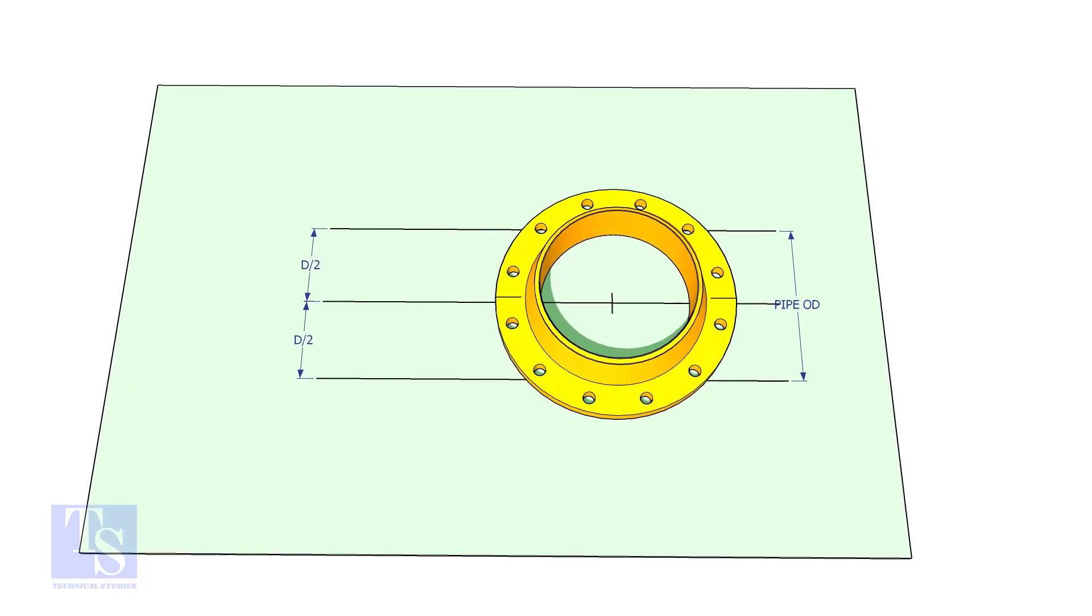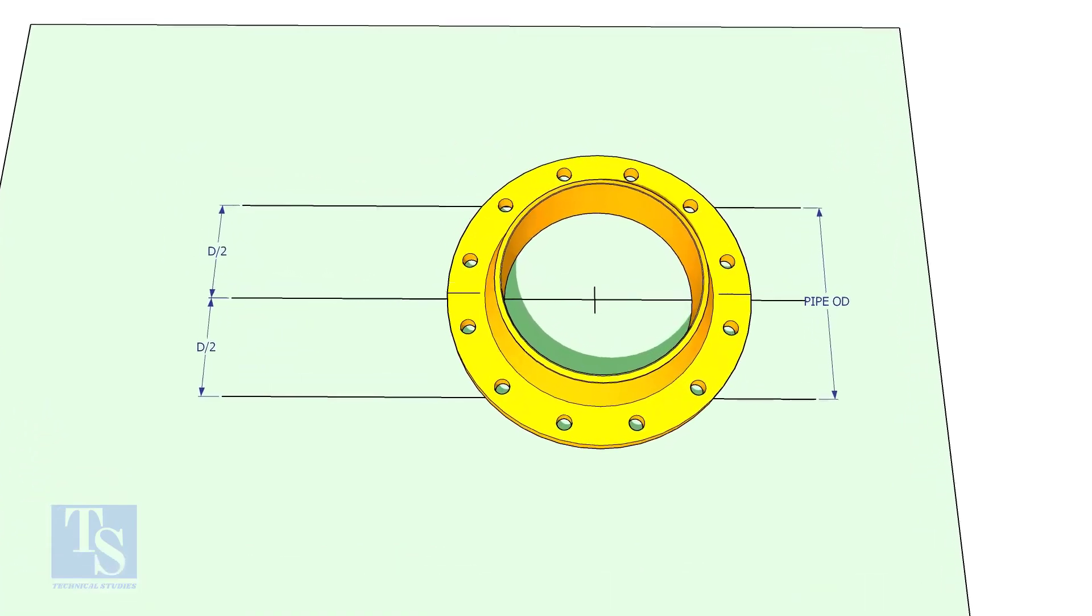Draw two parallel lines as shown. The distance shall be half OD of the elbow. Put the flange on the plate as shown and match the center line of the flange and the line on the layout.